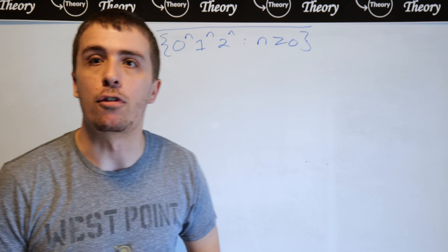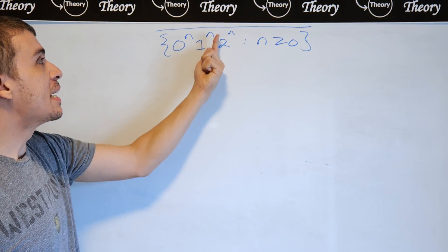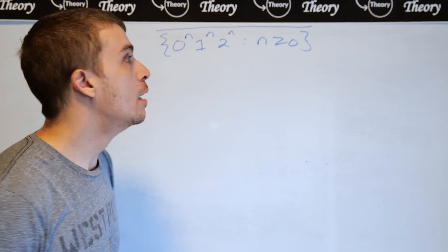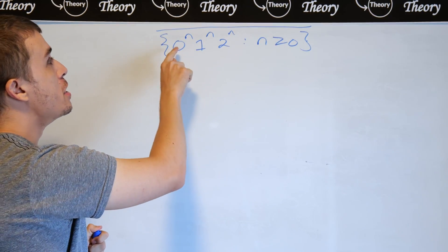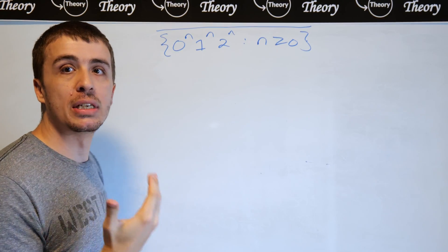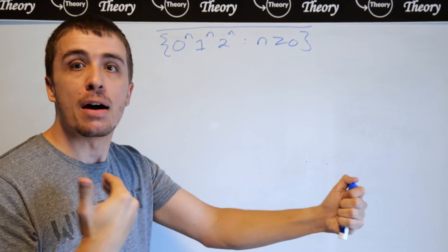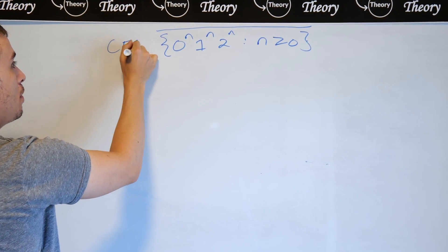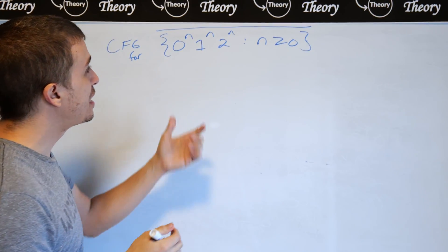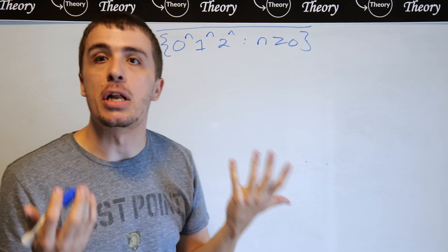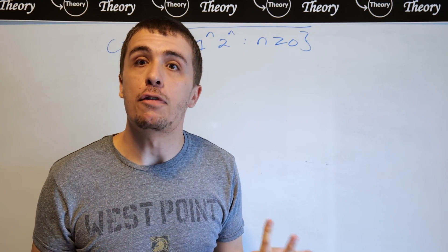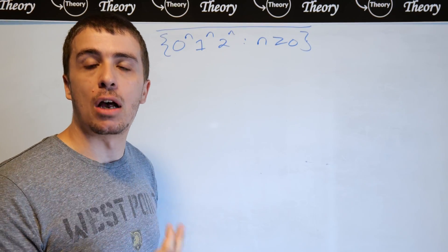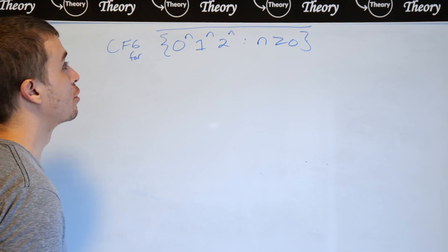Let's make a context-free grammar for the complement of the language 0^n 1^n 2^n, where n is at least zero — the bar upstairs indicates complement. So it's all strings that are not of that form. Notice the original language without the complement is not context-free, so there is no context-free grammar for it. We have to exploit some properties of the original language to make a CFG for the complement.